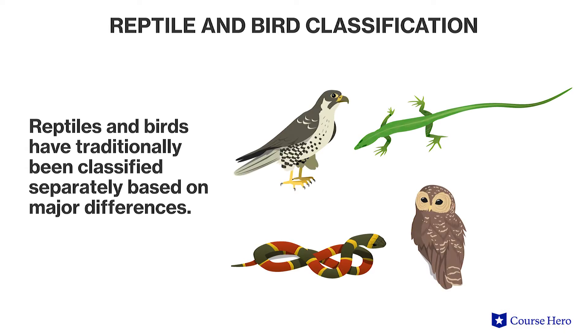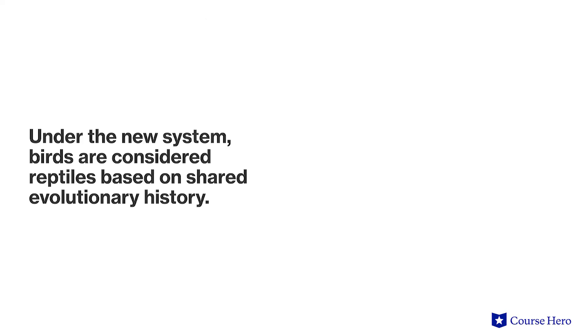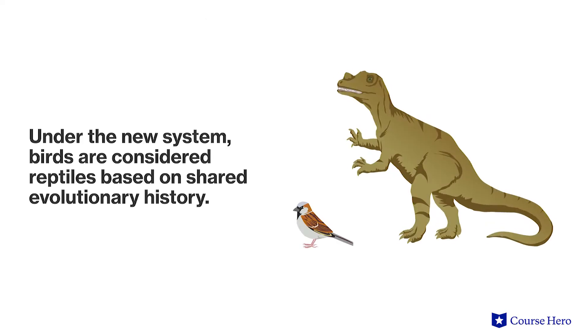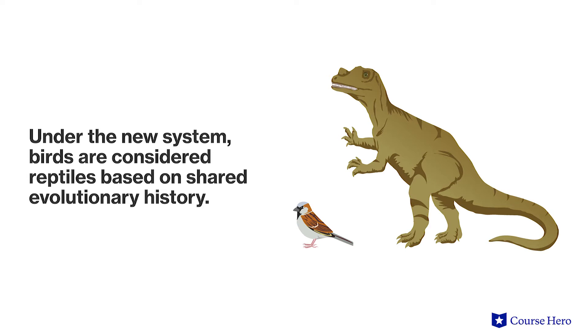For example, reptiles and birds have traditionally been classified separately based on major structural and physiological differences. However, under the new system, birds are considered reptiles based on shared evolutionary history. Some scientists argue that some traditional classifications should be maintained to avoid confusion, while others argue that the traditional taxonomic system is outdated and gives unreasonable importance to arbitrary sets of traits.